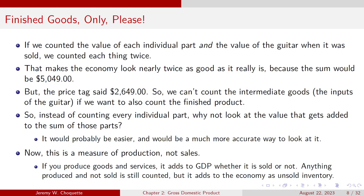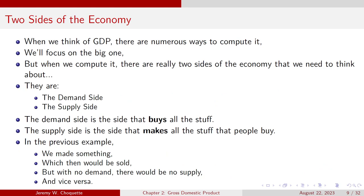Instead of counting every individual part, let's do the easy thing and look at the value that gets added to the sum of those parts. It's easier and likely a much more accurate way to look at it. Remember, this is a measure of production, not sales — if you're producing goods and services, it adds to GDP whether it gets sold or not. Anything that's produced and not sold is still counted; it's just added to the economy as what's known as unsold inventory.